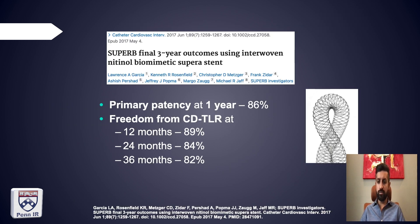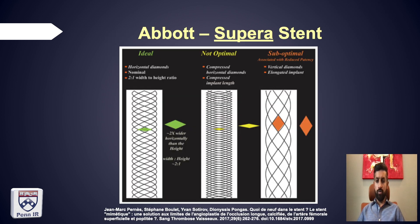The three-year data from the SUPERB study was still impressive: 86% primary patency at one year, and 89%, 84%, and 82% freedom from TLR at 12, 24, and 36 months respectively. Regarding deployment, you can overpack or underpack the stent. Ideal packing has diamonds twice as wide as tall. Compressed diamonds result in a shorter stent overall, while vertically elongated diamonds produce an elongated stent. You should err on the side of compressed, as elongated implants result in reduced patency rates.